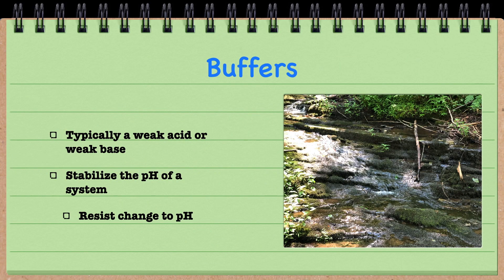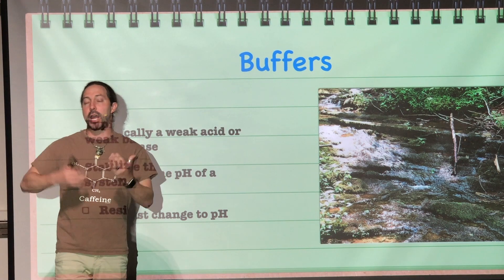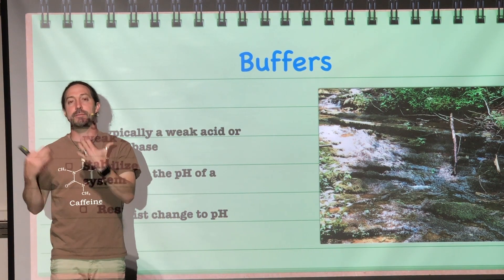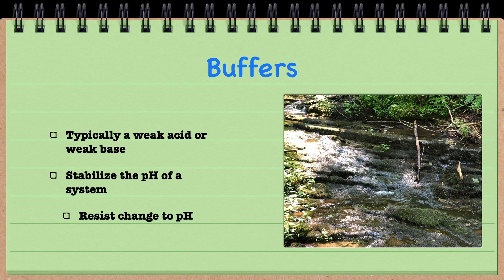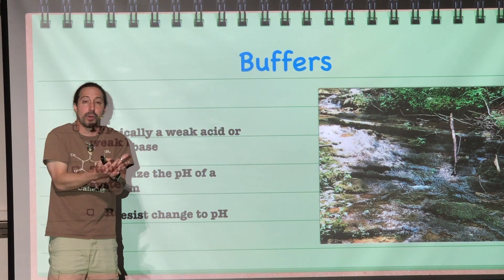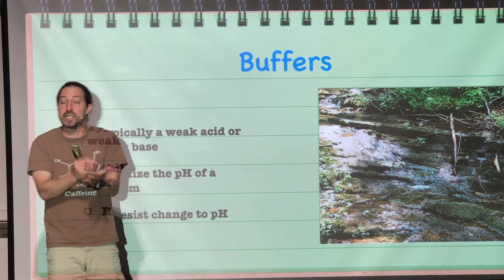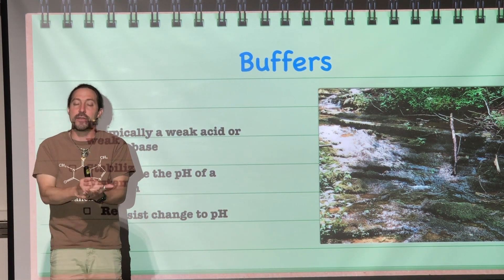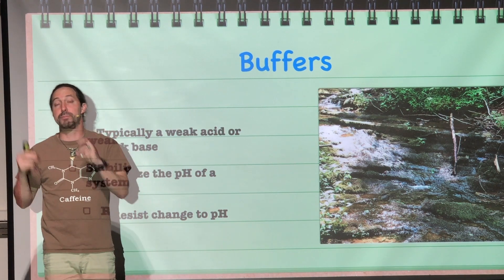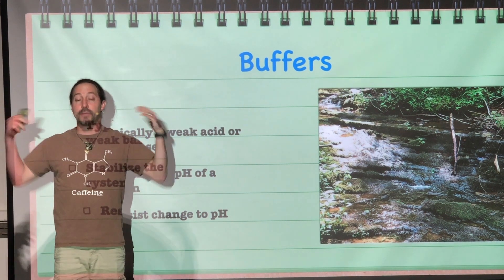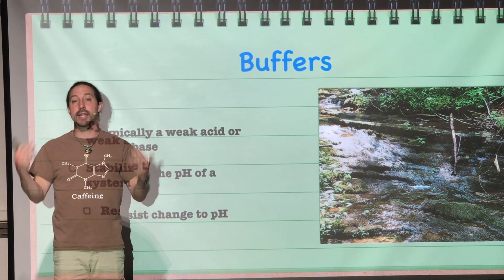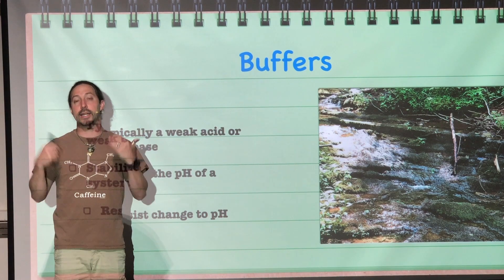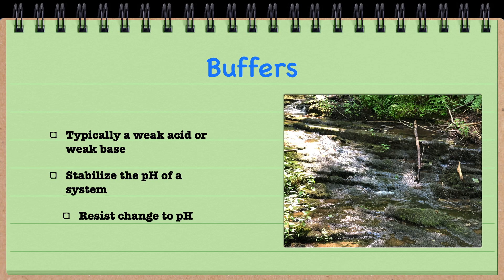To maintain those different pHs, our bodies use something called a buffer, which is typically a weak acid or a weak base. And buffers help maintain this pH of a specific solution. They help stabilize the pH of our system. We have buffers within our body to make sure that the blood, for example, that's supposed to be between 7 and 7.4, stays at about 7 to 7.4. Our bodies use buffers to help us maintain homeostasis. And the environment also has buffers within it to help maintain the pH of different aquatic ecosystems. They resist those changes to pH and help the system stay stable.